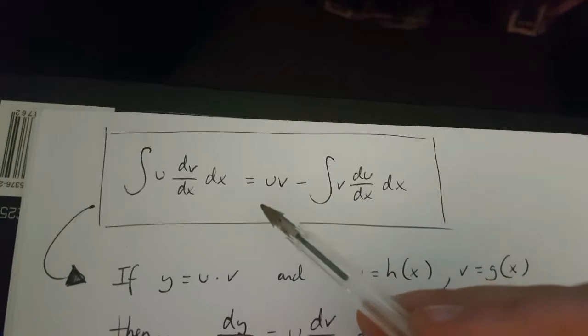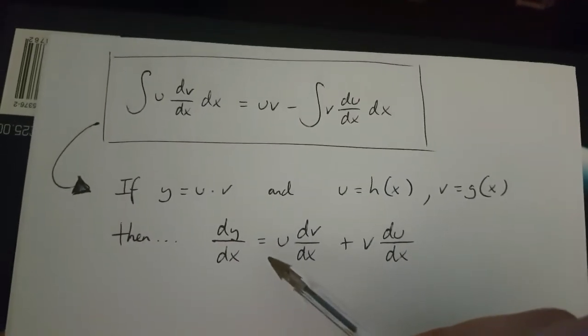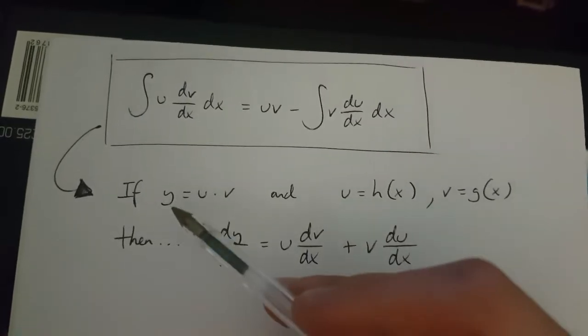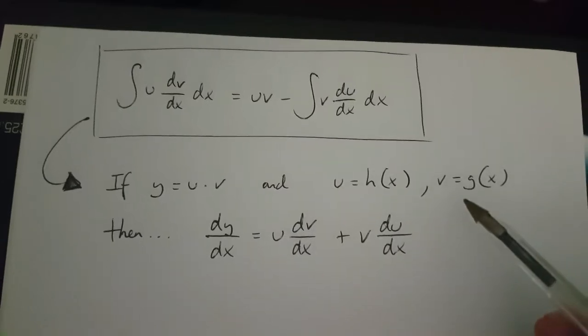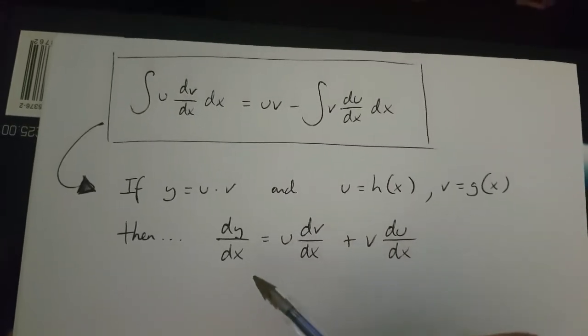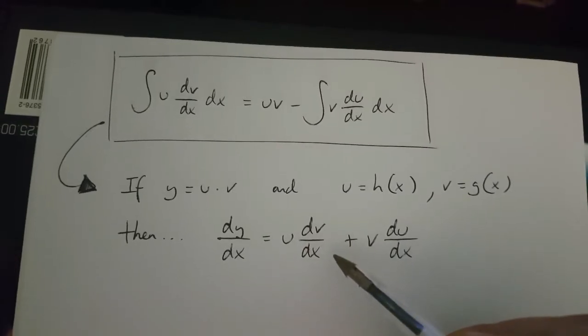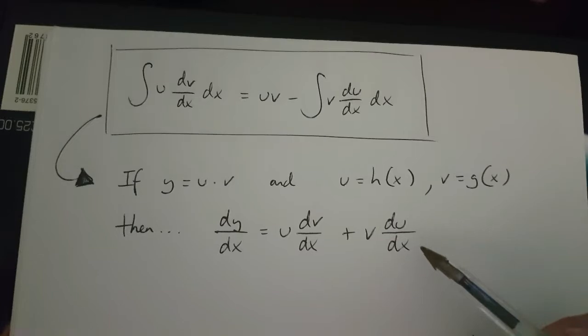Now, in order to derive this, we need to understand the product rule. That is, if y equals u times v, and u is a function of x, and v is a function of x, then dy over dx is u dv over dx plus v du over dx.